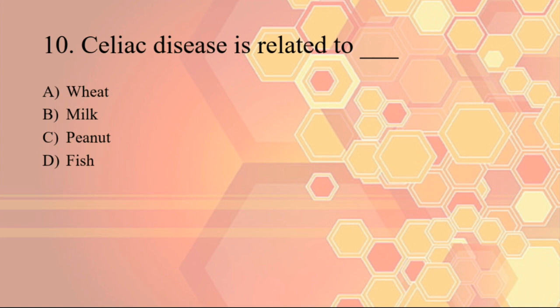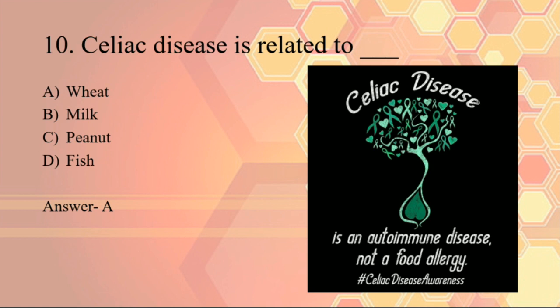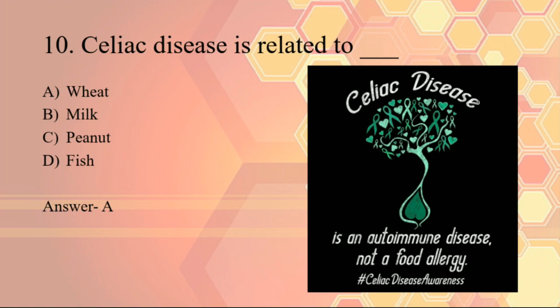The last question: celiac disease is related to consumption of wheat. Celiac disease is an autoimmune disorder triggered by eating gluten, which is found mainly in wheat, barley, rye, and some other cereals. It is also known as gluten-sensitive enteropathy. An important point is that celiac disease is neither a food allergy nor a food intolerance disorder — it is an autoimmune disorder. That's all for today's video; see you in the next one with more important questions. Stay safe, stay healthy.